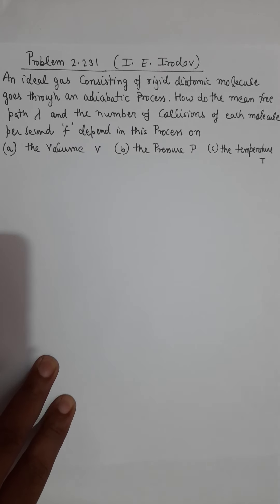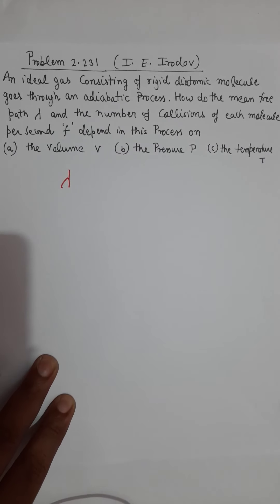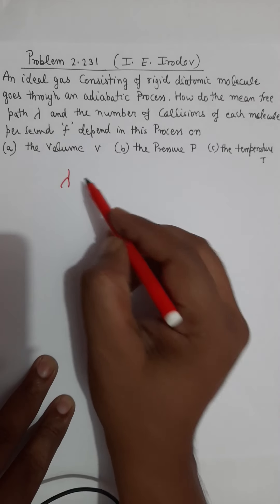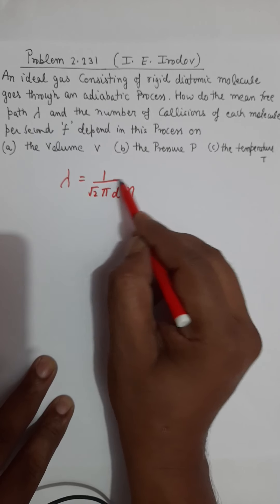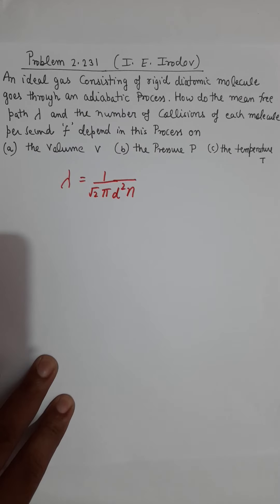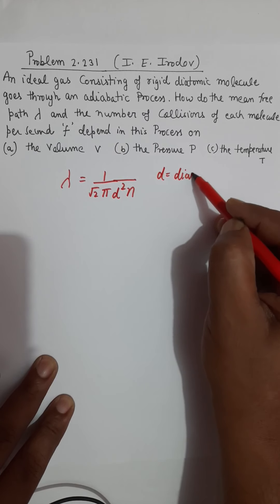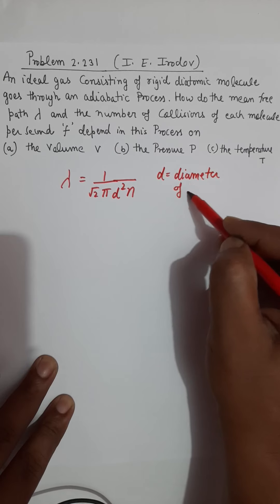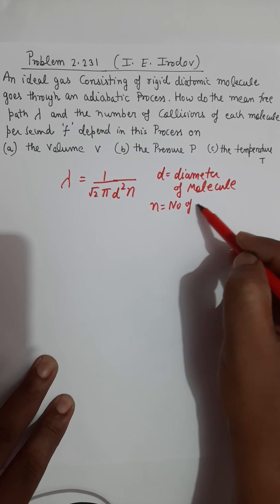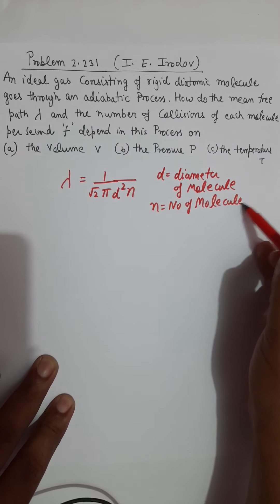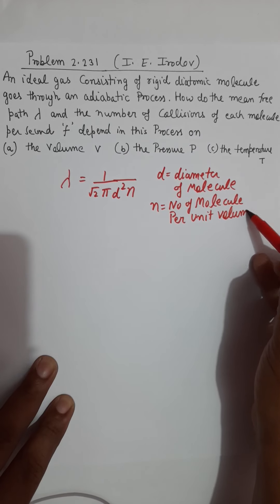The concept behind this question is simple. The mean free path, denoted by lambda, is equal to 1 over square root of 2 times pi times d squared times n. Where d is the diameter of the gas molecule, and n is the number of molecules per unit volume — that is, the molecular concentration.